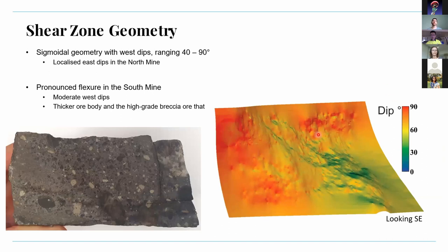When we look at the shear zone geometry, what stands out the most is the wide range of west dips from 40 to 90 degrees, with localized east dips in the north. This effect is largely due to D3, which I'll explain shortly. The flatter part of the shear zone is also associated with thicker ore and higher grade, particularly the matrix-supported breccia shown in the image.